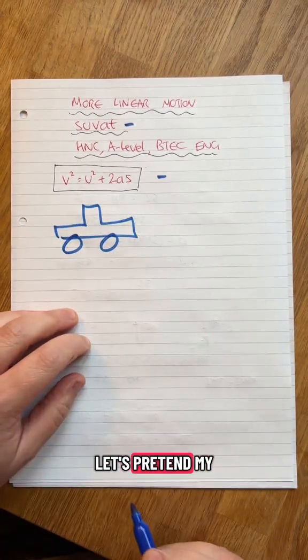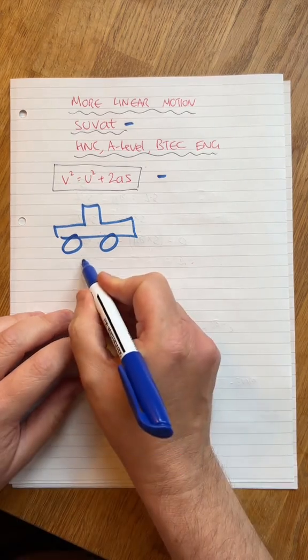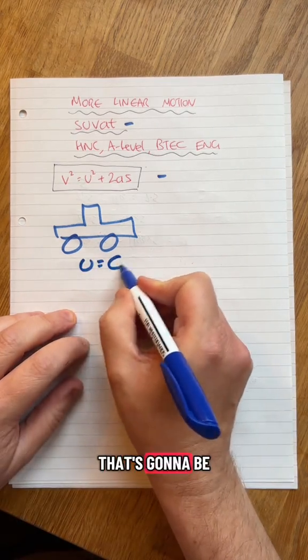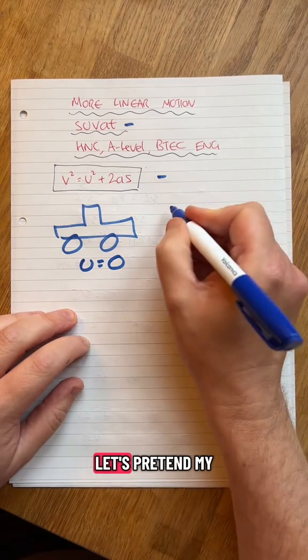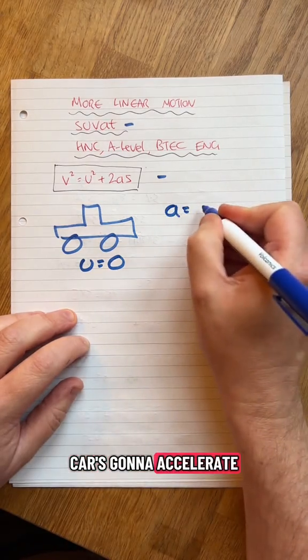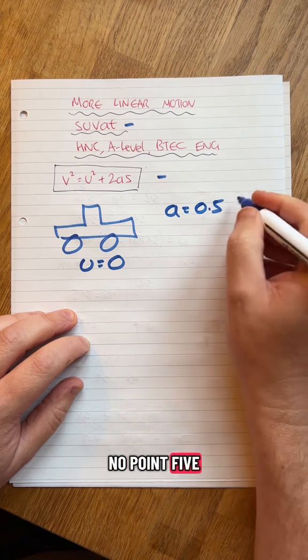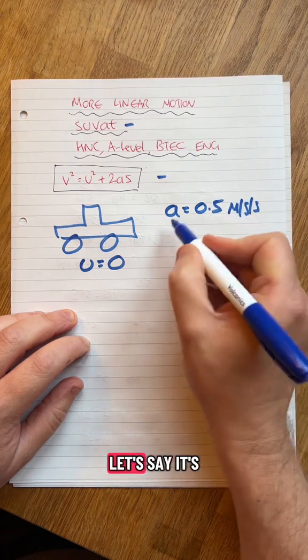Let's pretend my car starts off at zero. U means starting velocity, that's going to be zero. Make it easy. Let's pretend my car's going to accelerate at 0.5, obviously the unit.